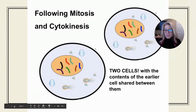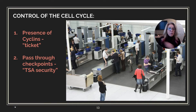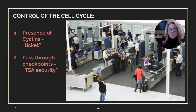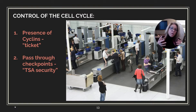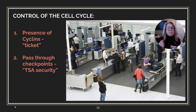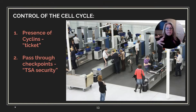Controlling the cell cycle is a big deal. Think about it — someone who's lost a limb would benefit from turning those cells back on, while cancer is when cells keep growing when you don't want them to. There are two main parts to controlling the cell cycle, and an airport analogy helps. At an airport you can't get far without showing your ticket, and then you go through security — TSA screens you before you board.